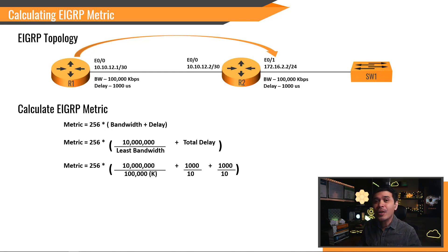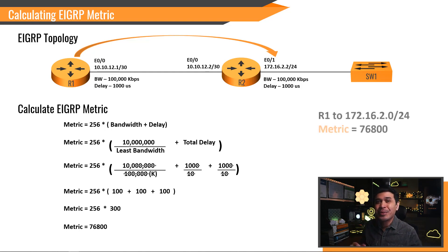Here is the math. We're going to start canceling values. We need to make sure that our values are simplified. The result is 256 multiplied to the sum of 100, which is the bandwidth, plus 100, this delay of R1, and another 100, which is the delay value of R2. And we all know that if we add all three 100s, the total will be 300. Now we're going to multiply 256 to 300, and the result is 76,800. Calculating EIGRP metric is that simple.